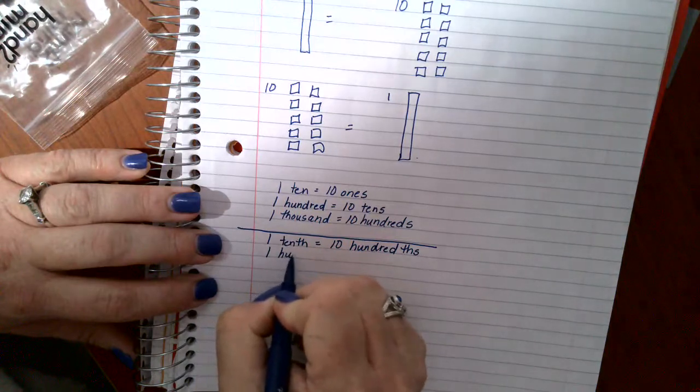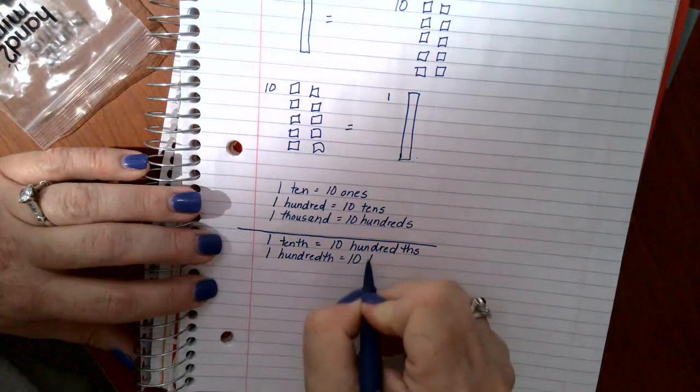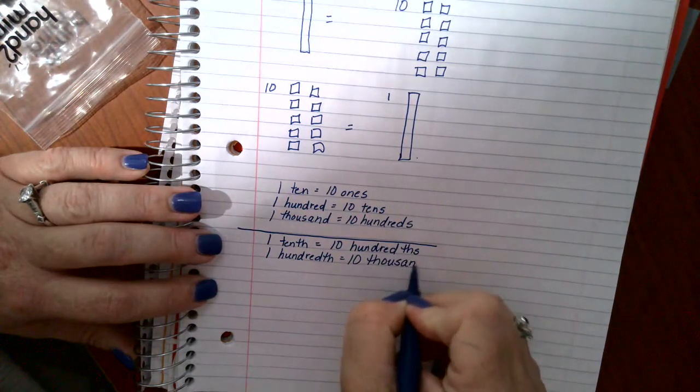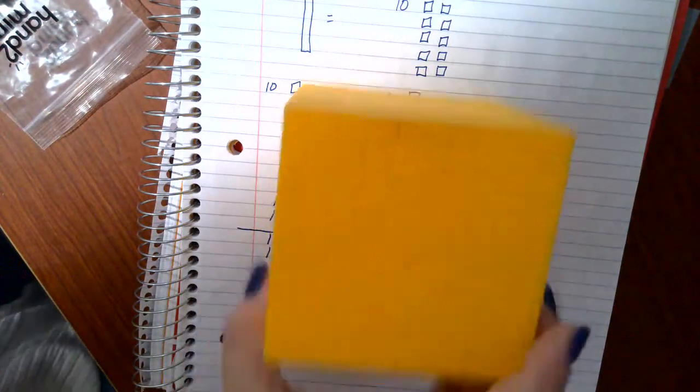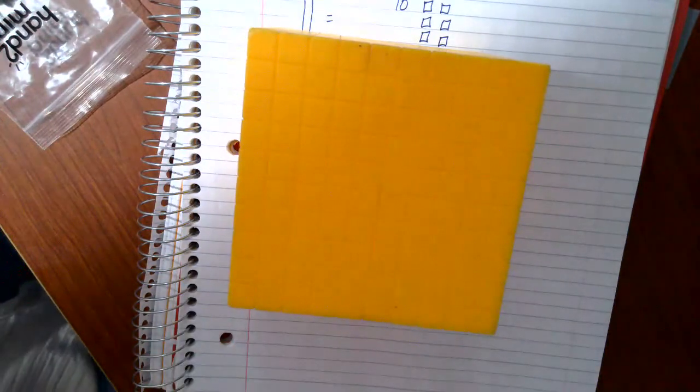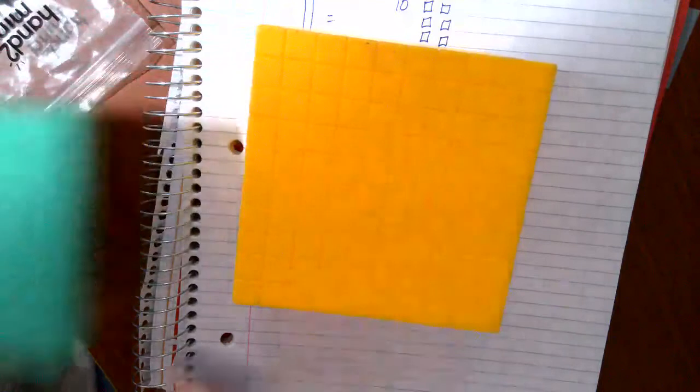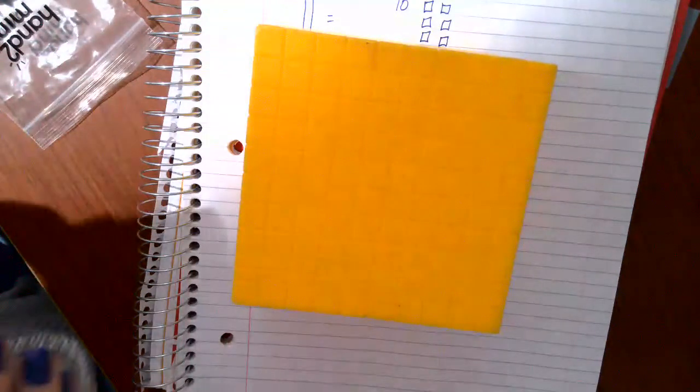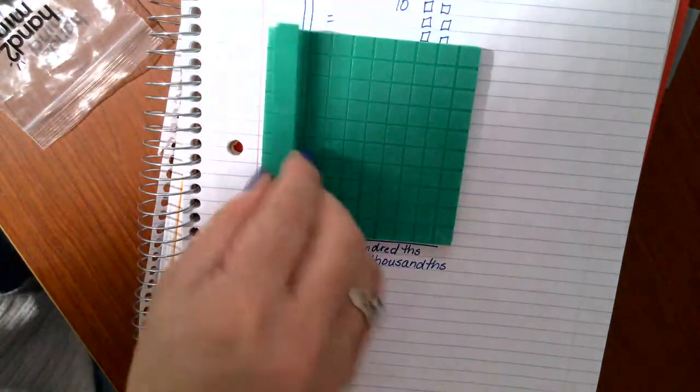One hundredth equals ten thousandths. Ten thousandths. Again, if we look at this ginormous cube, one of these could fit in there ten times. Okay. So, one of these, one hundredth, is ten thousandths.